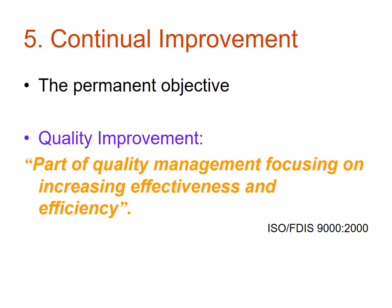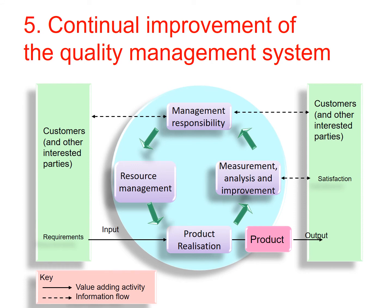Continual improvement is a permanent objective — quality improvement is part of a quality management focusing on increasing effectiveness and efficiency. The continual improvement diagram for a quality management system shows customers and other interested parties linked into management responsibility, which also covers resource management, product realisation, and measurement and analysis. Across the bottom we have requirements going to input, making the product, which is the output, and then feeding customer satisfaction back as a measurement — these are all value-adding activities with information flows.